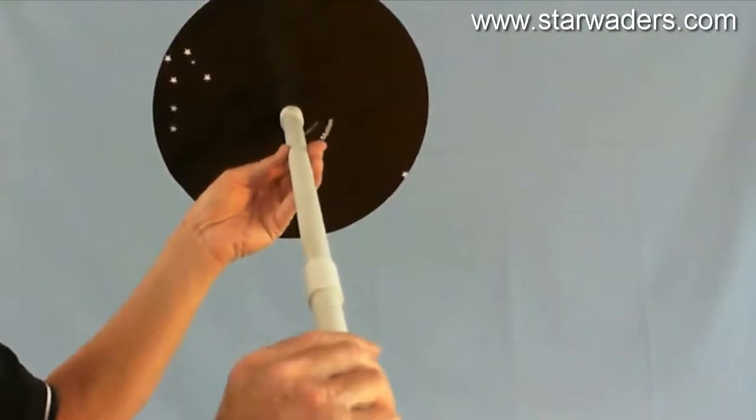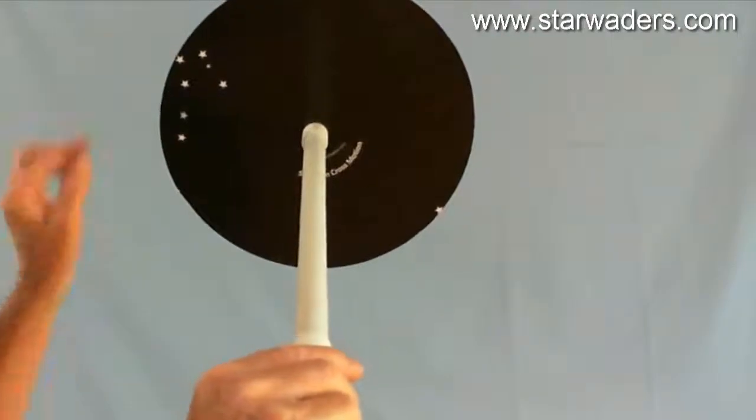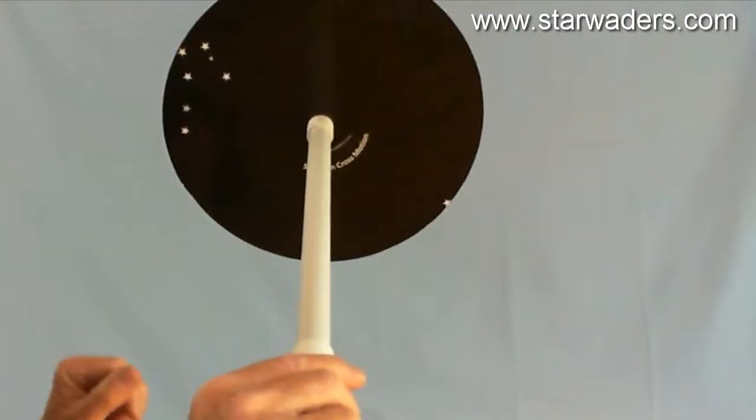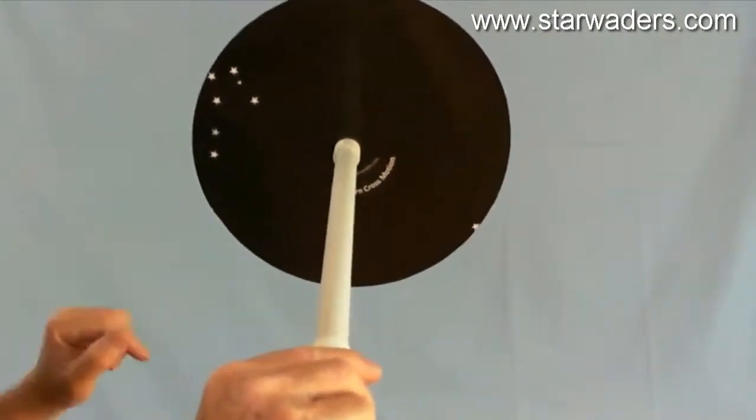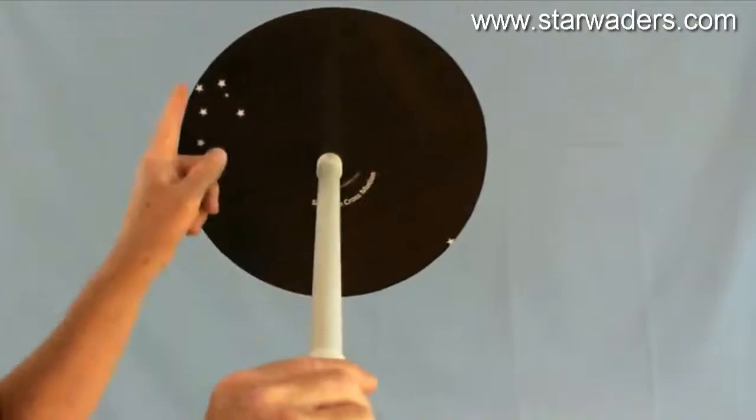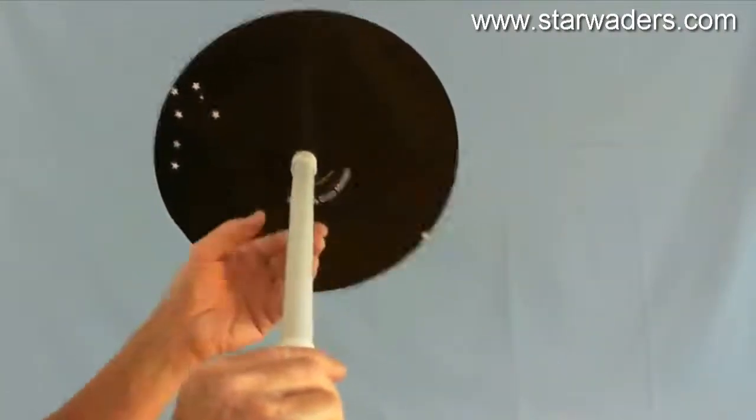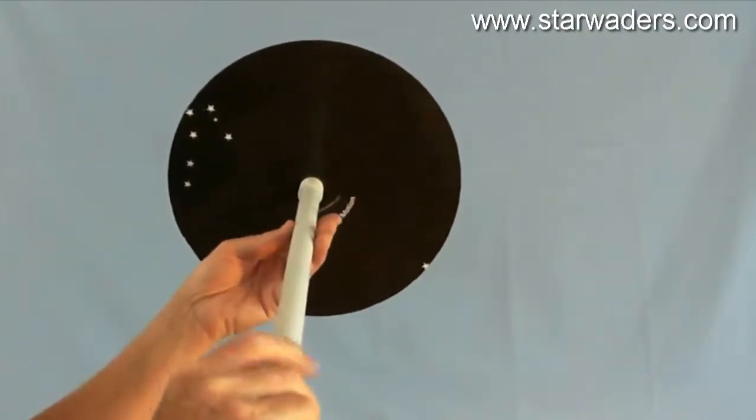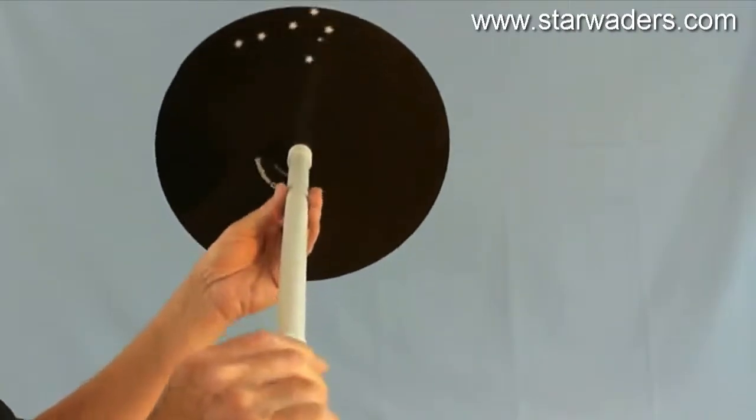So, let's assume that you have learnt how to find the Southern Cross, and shown how to recognise it when it is in this orientation. You would be expecting to see the two pointers, more or less being below it, and you would be expecting to see the cross pointing down to your right and lower down. So, what we've got to realise now is that this is what the Southern Cross does.